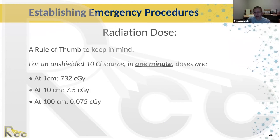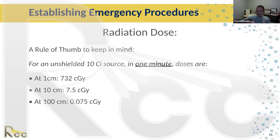Some rules of thumb on radiation dose: for a 10 Ci source, you get approximately 732 centigrade dose per minute at 1 centimeter. If a physician can remove the applicator in one minute, the patient just received about 7 Gy at 1 centimeter from the source. At 10 centimeters, the physician's hands would receive about 7 centigrade — a big difference. At 100 centimeters, you're looking at about 75 milligray. Distance is huge when it comes to dose reduction with these sources.